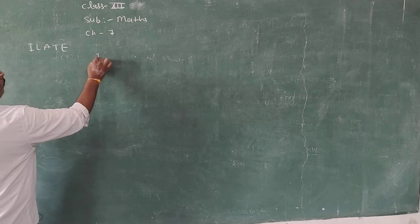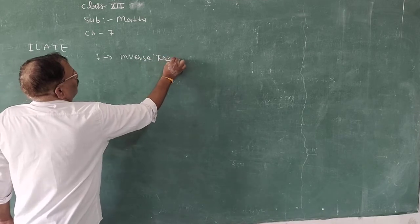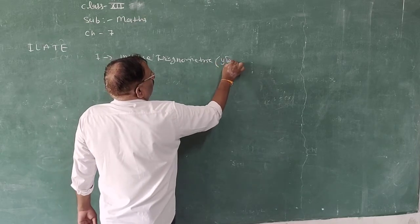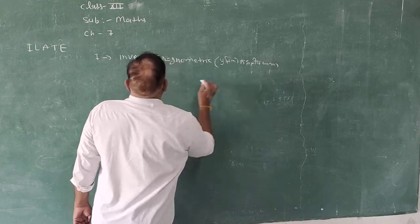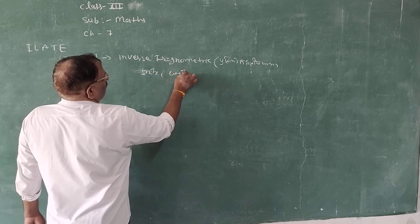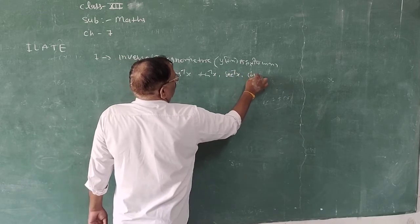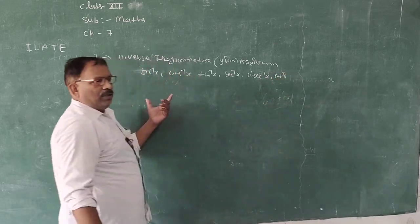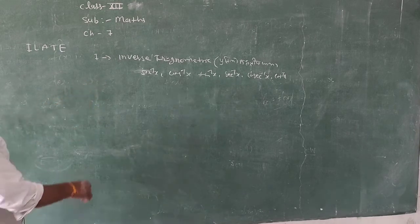I stands for Inverse Trigonometric Functions — प्रतिलोम त्रिकोणमितीय फलन. These are: sin inverse x, cos inverse x, tan inverse x, sec inverse x, cosec inverse x, and cot inverse x. So there are 6 inverse trigonometric functions.